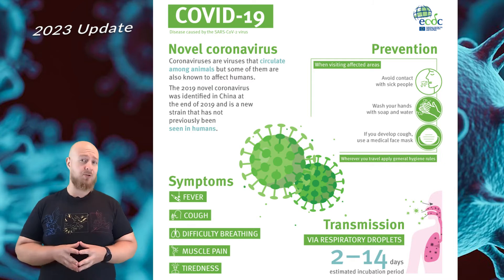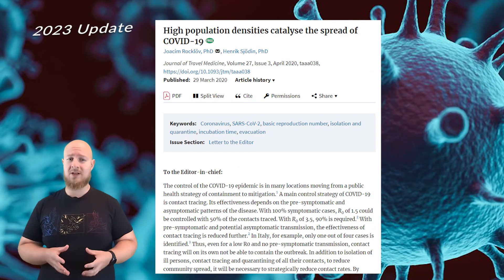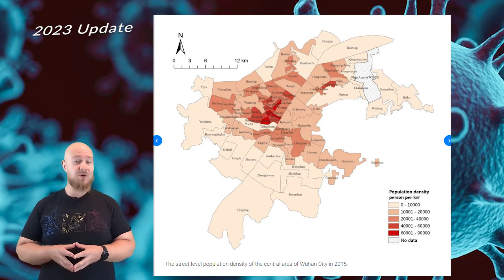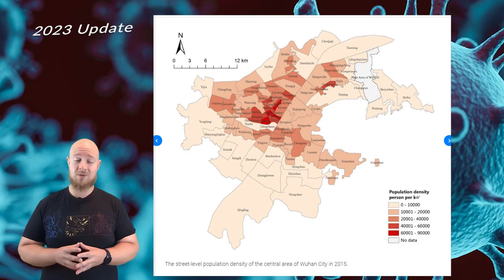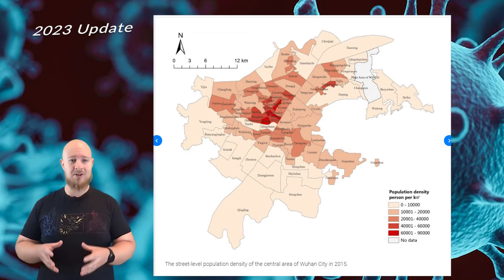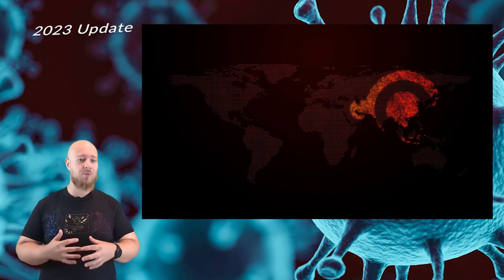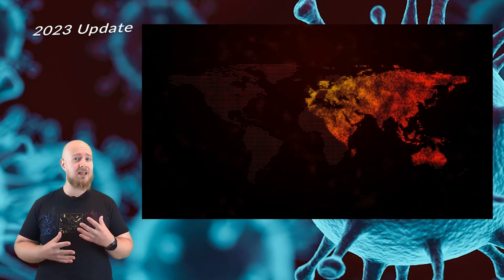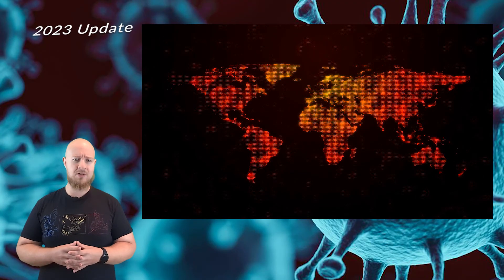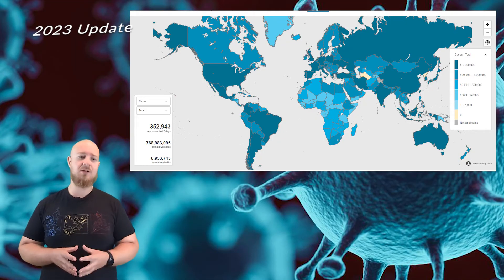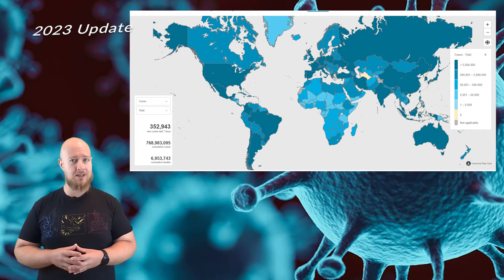Because COVID-19 is spread through respiratory droplets, the denser the population, the faster the rate of transmission. Wuhan, the city where this virus was first identified, is one of the largest cities in central China, with a population density of 13,000 people per square mile. After spreading, the virus quickly took hold in other regions that are also big economic and travel centers with high population densities, like the Lombardia region in Italy, Madrid in Spain, London in the UK, and New York and LA in the United States.